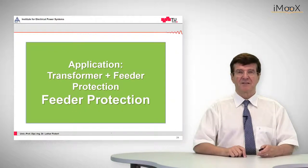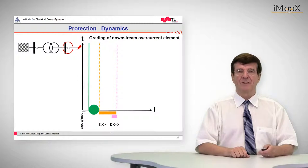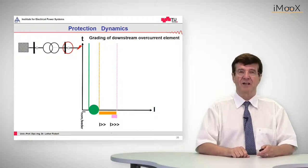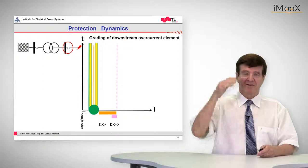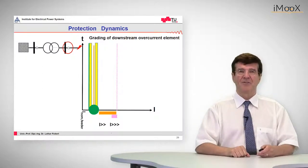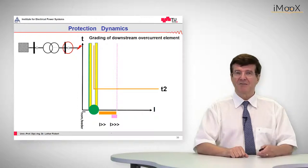The next element is the feeder protection. In overcurrent time grading, we must work our way from the end towards the source. We have two limits: one is the nominal current of the feeder, and the other is the worst case lowest short circuit current, which is a short circuit at the far end of the longest feeder. We can choose a pickup value here, but again we must not infringe with the safety margins. It must always pick up for the worst case, so it must be below that short circuit current, and it must not infringe with normal operation, so it must be above the nominal current of the feeder. The tripping time is chosen as T2.